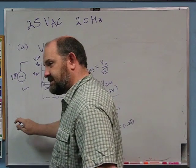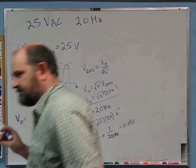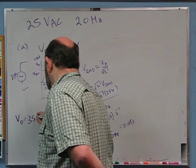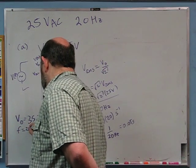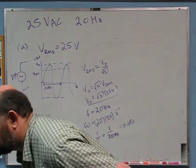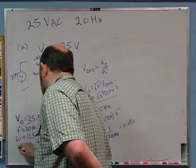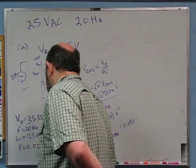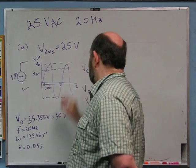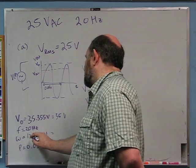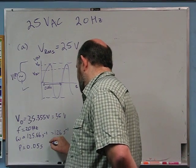Putting these in the calculator: the amplitude V_0 came out to be 35.355 volts — to two sig figs, that's 35 volts. The frequency is 20 Hertz. The angular frequency came out to be 125.66 seconds to the minus one — I'll call it 126. And the period is 0.05 seconds, which is 1/20th of a second.